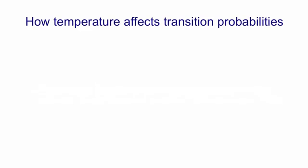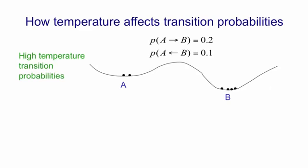The reason for simulated annealing is that the temperature in a physical system, or in a simulated system with an energy function, affects the transition probabilities. In a high-temperature system the probability of going uphill from B to A is lower than the probability of going downhill from A to B, but it's not much lower.